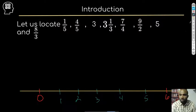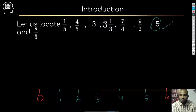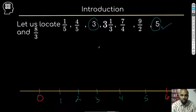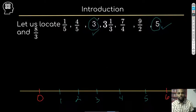Let's start with the low hanging fruit, the easiest ones. Five is right there — check, got that done. And three, pretty easy. We're done with that. I'm just going to cross those out.